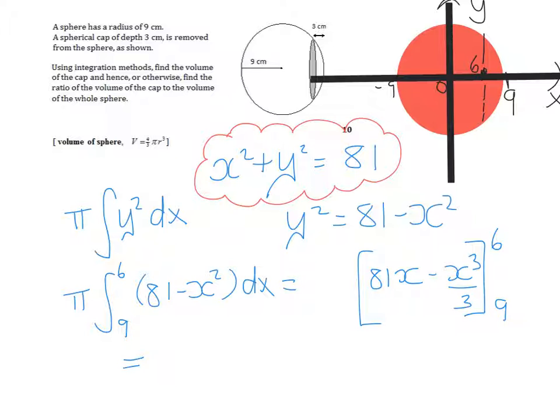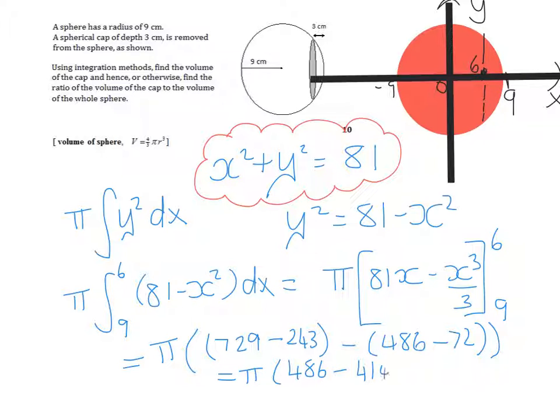Which is going to give me pi. 81 times 6 is 729, and 6 cubed over 3 is 243. 81 times 9 is 486, and 9 cubed divided by 3 is 72. Altogether that's 486 take over 414, which gives me 72 pi.